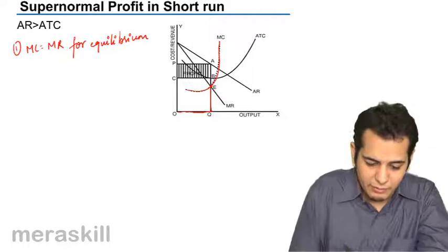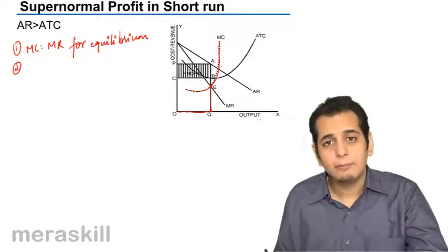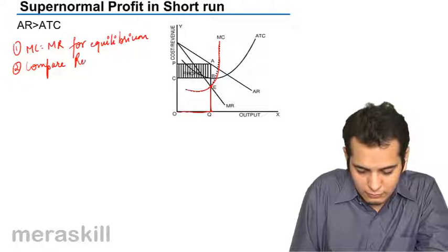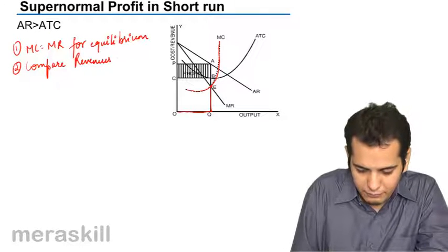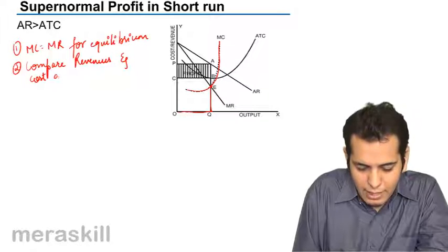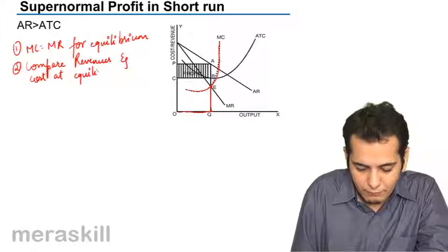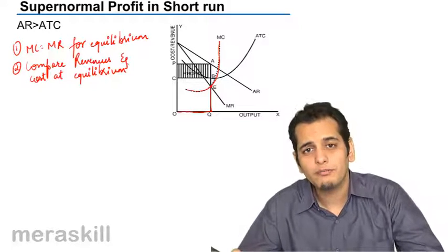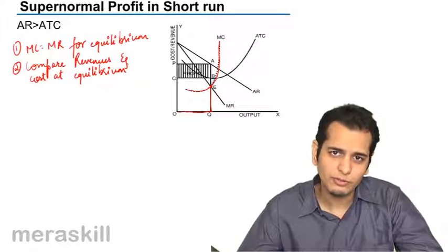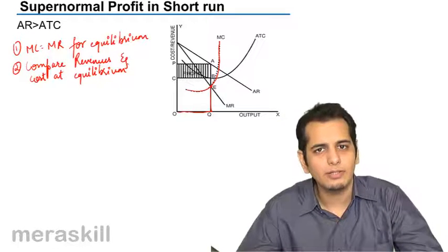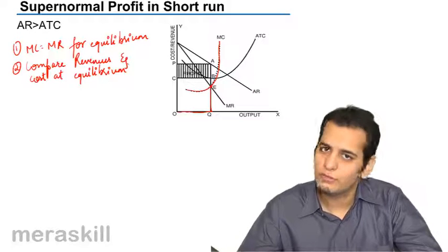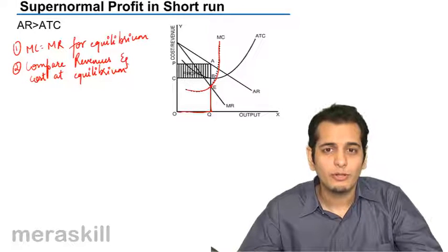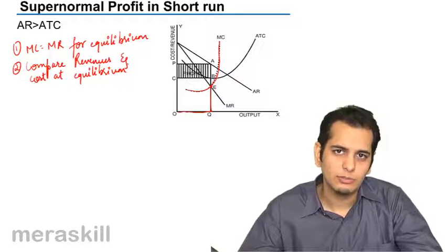Now my second step is I should compare the revenues and costs at equilibrium. Now that you know that you are at equilibrium, compare your revenues with costs. If your revenues are more than cost, you will have profits. If your revenues are equal to your cost, you will have a situation of normal profits, that is the break-even, and when your revenues are less than your cost, you will incur losses.